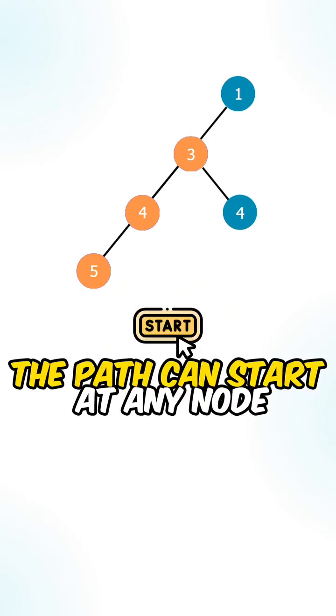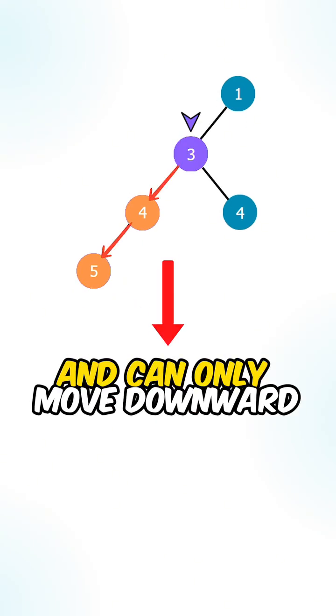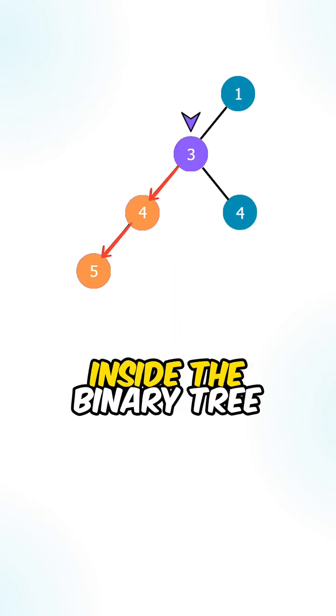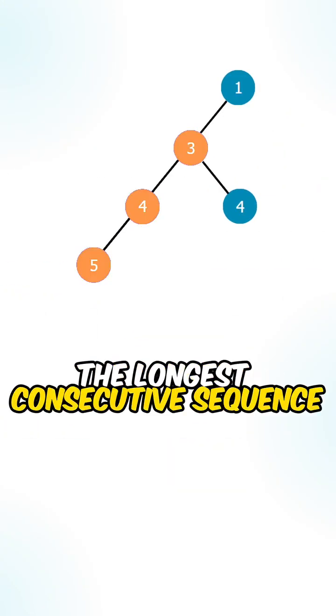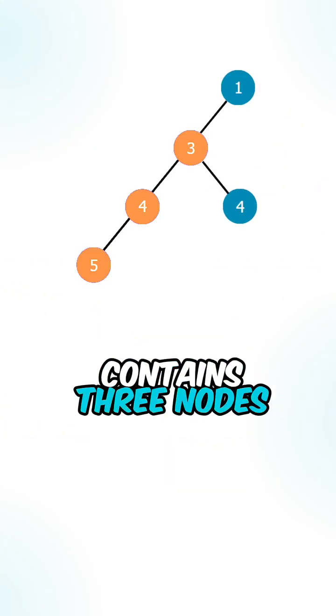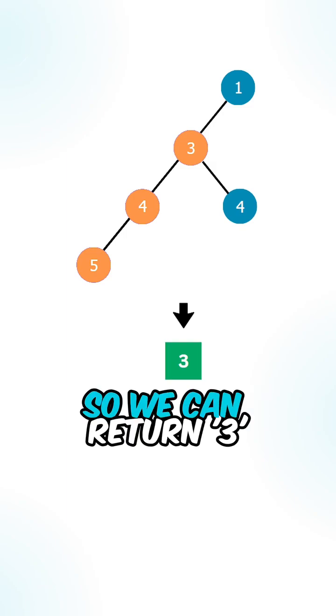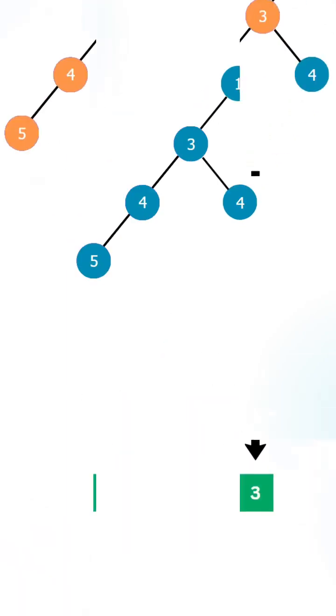The path can start at any node inside the tree and can only move downward inside the binary tree. Given this binary tree, the longest consecutive sequence contains 3 nodes, so we return 3.